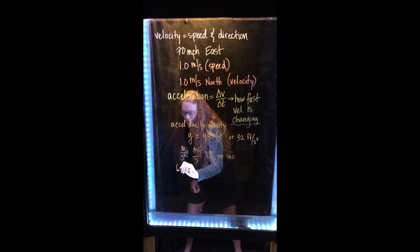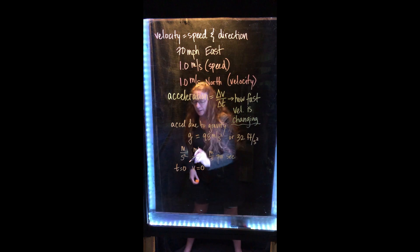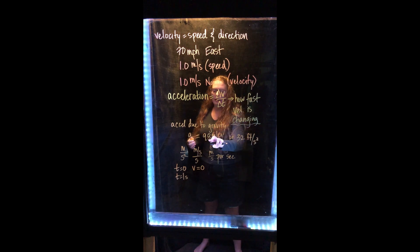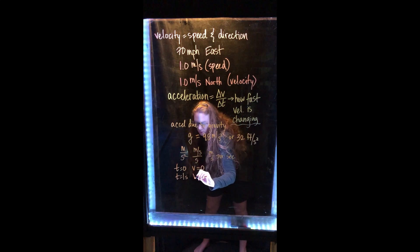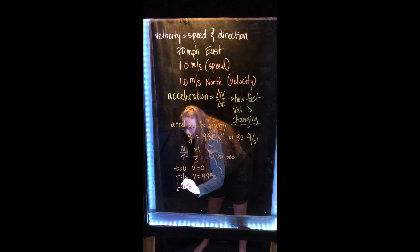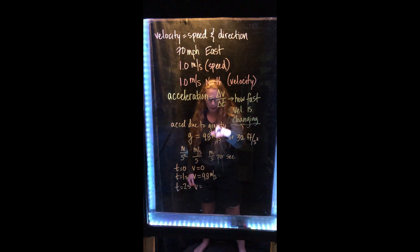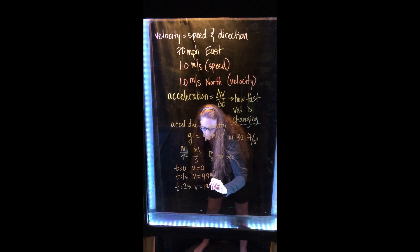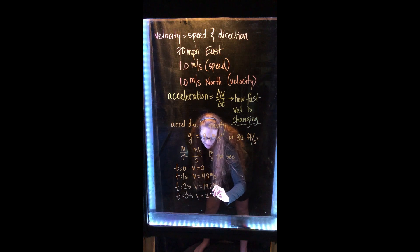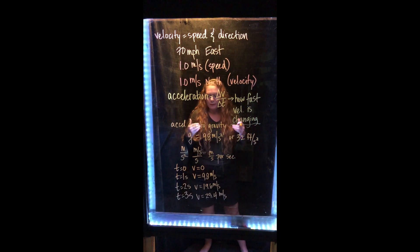So if something is dropped at time zero with an initial velocity of zero, after one second it will be going 9.8 meters per second. After two seconds we gain another 9.8 m/s, so now we're up to 19.6 meters per second. After three seconds, our velocity is 29.4 meters per second. That's what acceleration really means — it's how fast things are changing, not how fast you're going.